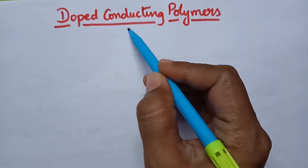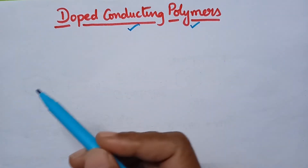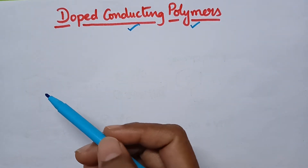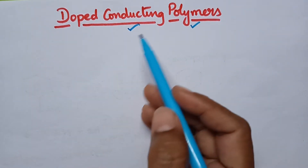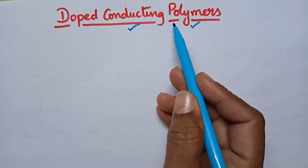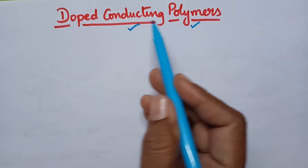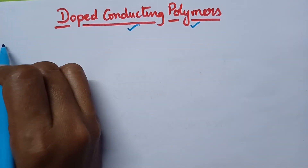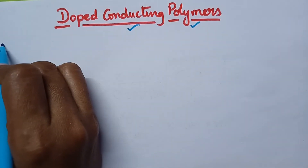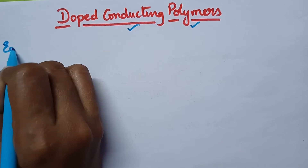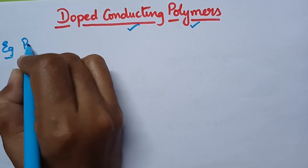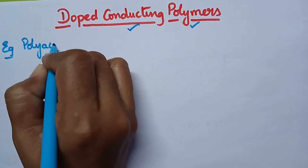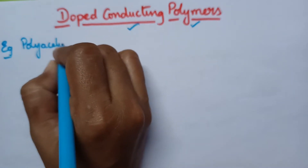Conducting polymers are polymers which exhibit conductance. The conductance is mainly due to the presence of a conjugated system. The best examples of conducting polymers include polyacetylene, polynaphthalene, and polyaniline.